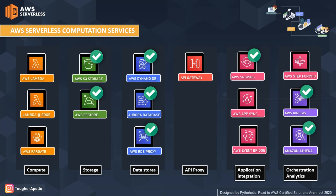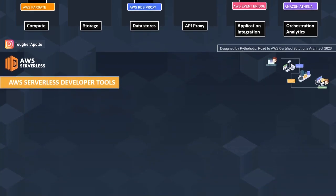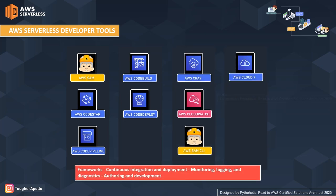For compute we have AWS Lambda, Lambda@Edge, and AWS Fargate. For storage we have AWS S3 and AWS EFS. For data storage we have AWS DynamoDB, Aurora database, and AWS RDS Proxy. For API proxy we have API Gateway. For application integration we have AWS SNS, SQS, AppSync, and AWS EventBridge. For orchestration and analytics we have AWS Step Functions, Kinesis, and AWS Athena. Most of these services have already been covered, and the remaining important ones will be covered one by one.